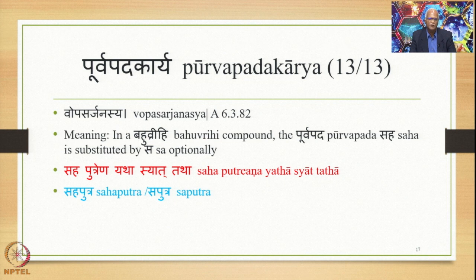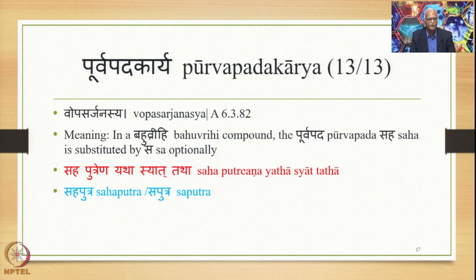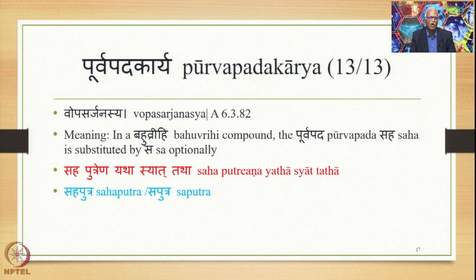Similarly, another example is the Sutra Vopasarjanasya, 6.3.82. In a Bahubrihi compound, the Purvapada Saha is substituted by Sa optionally. So for Sa Putrena Yathasyat Tatha, this Sa is optionally substituted by Sa, giving both forms: Sa Putra as well as Saputra as the final compound outputs. This is also an example of morphological modification happening on the Purvapada.